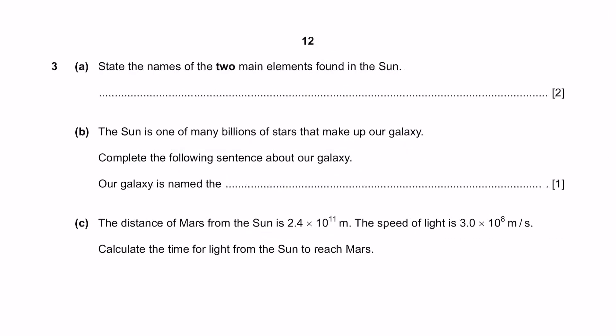Part B. Compare the structure and the size of the four inner planets with those of the four outer planets of our solar system. The first four planets are rocky and small, and the last four planets are gaseous and large. Question 3. State the names of the two main elements found in the Sun. The two main elements are hydrogen and helium. In the Sun, nuclear fusion takes place whereby hydrogen atoms fuse together to form a helium atom.